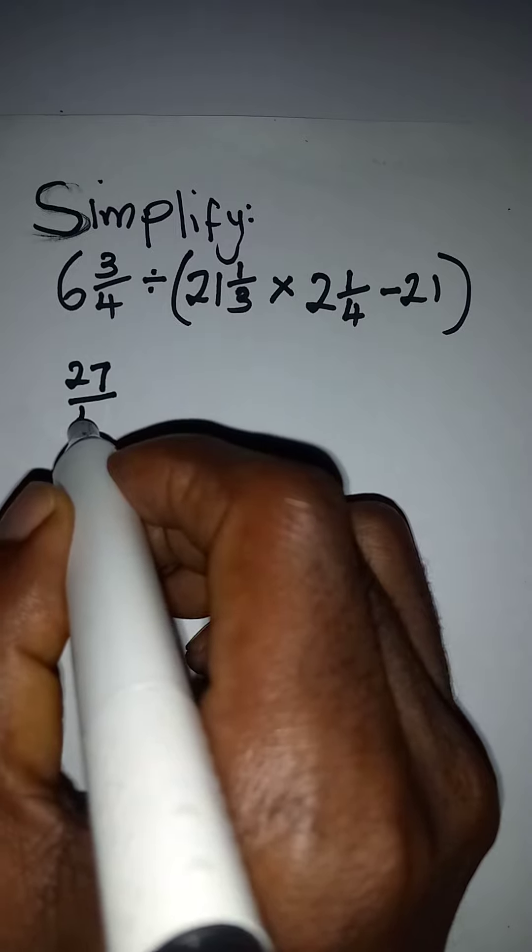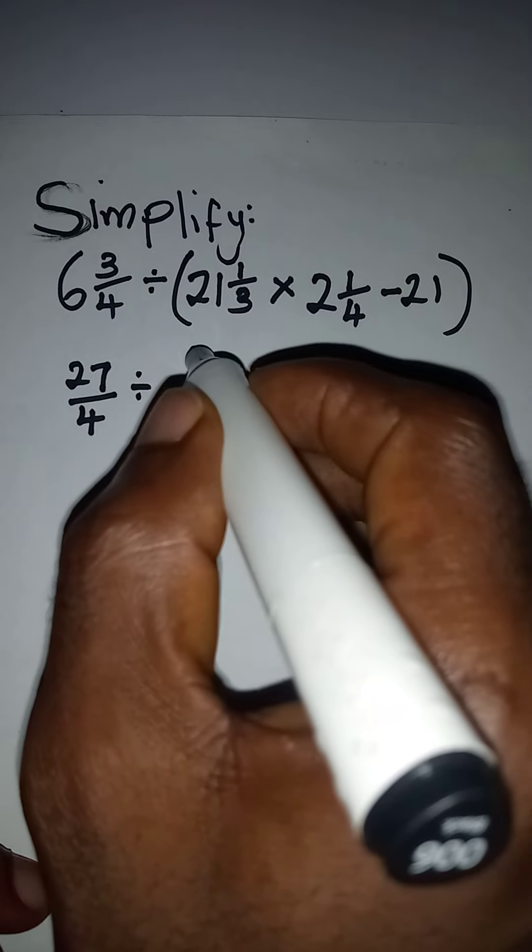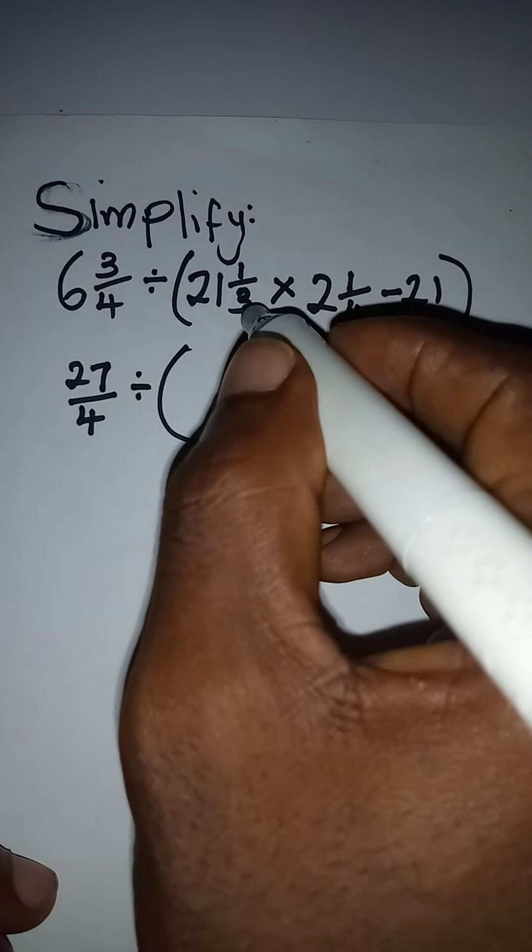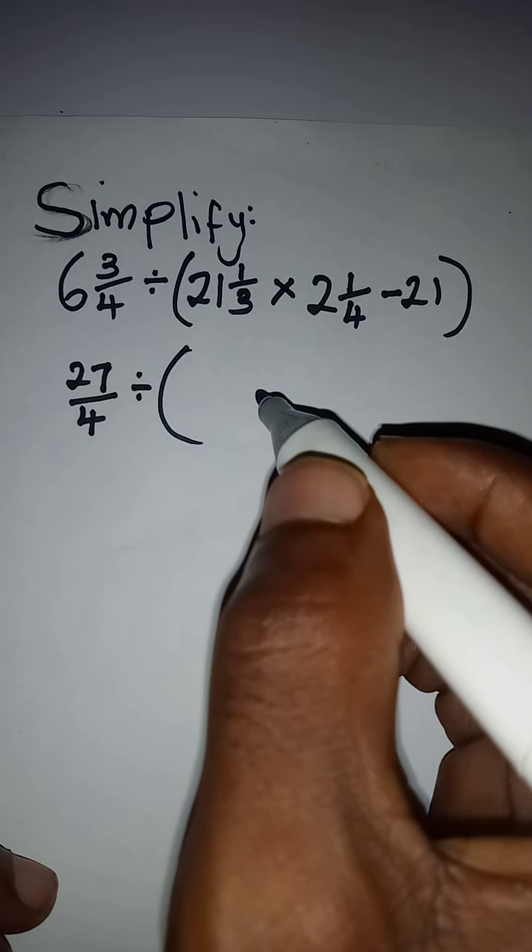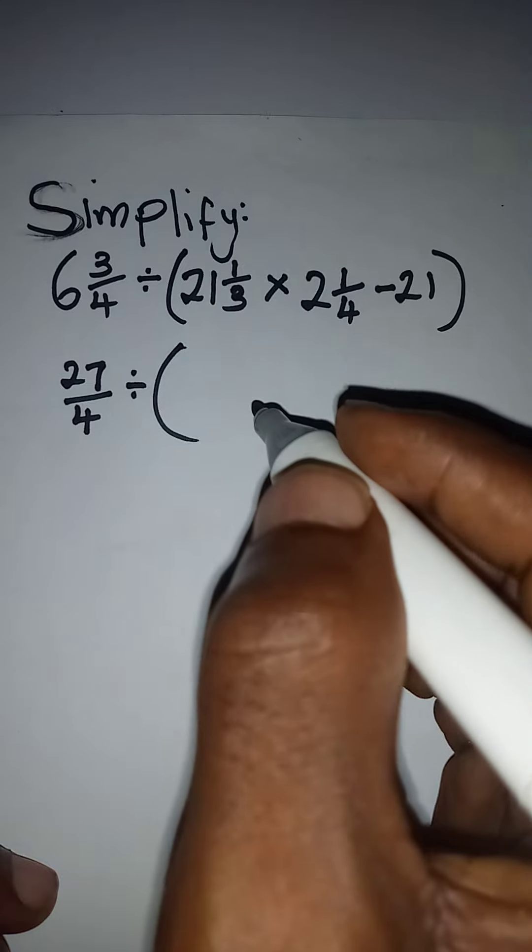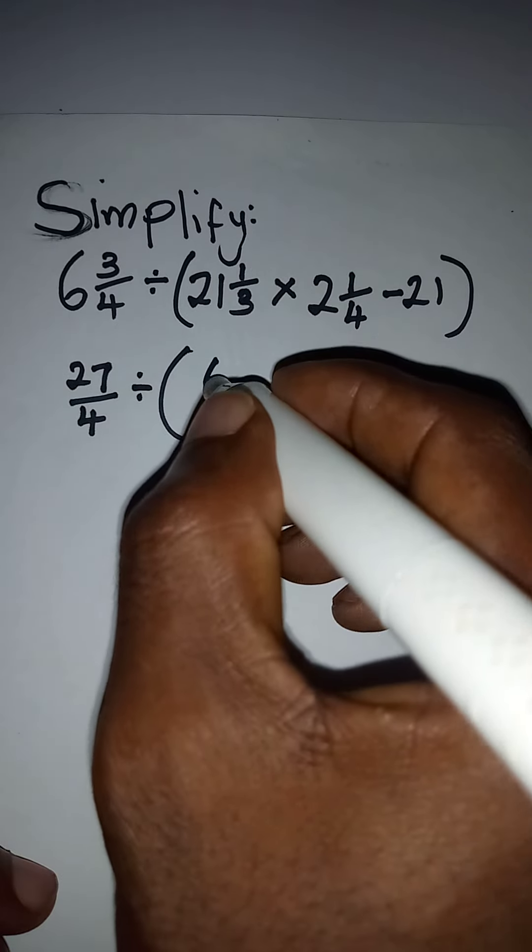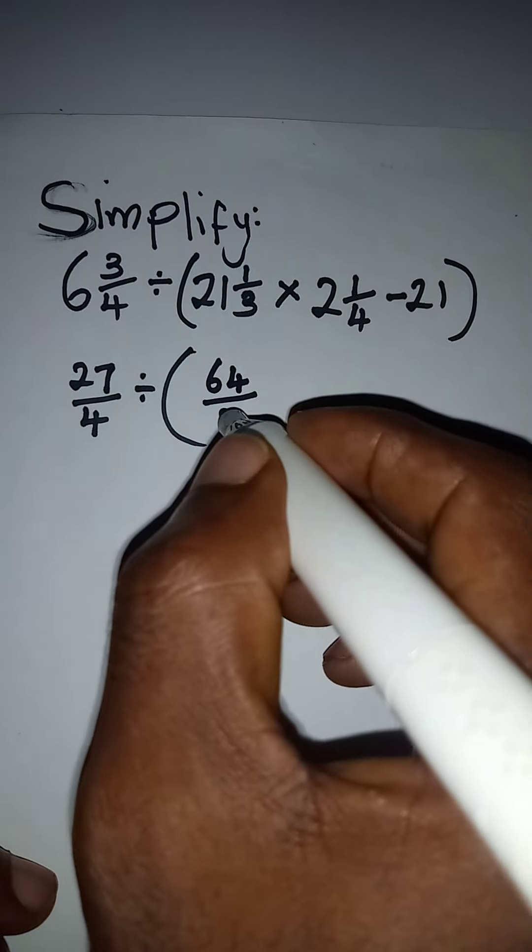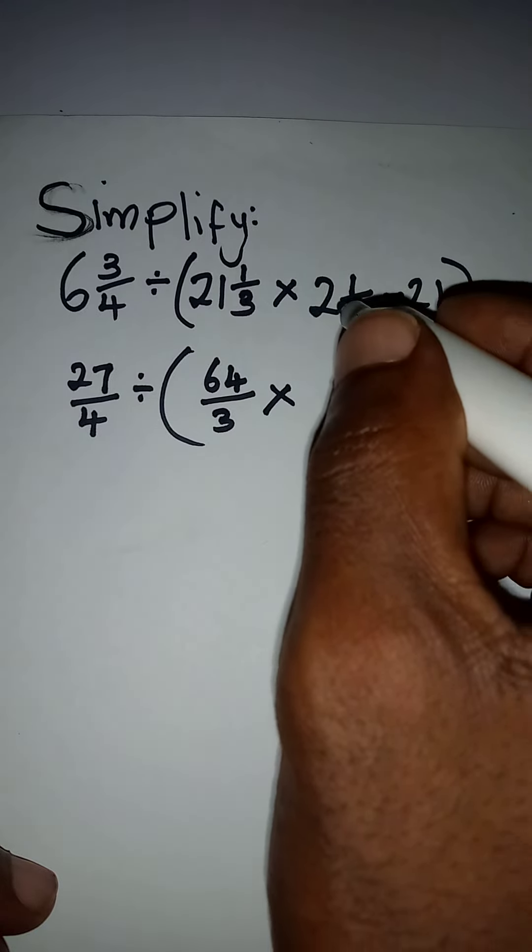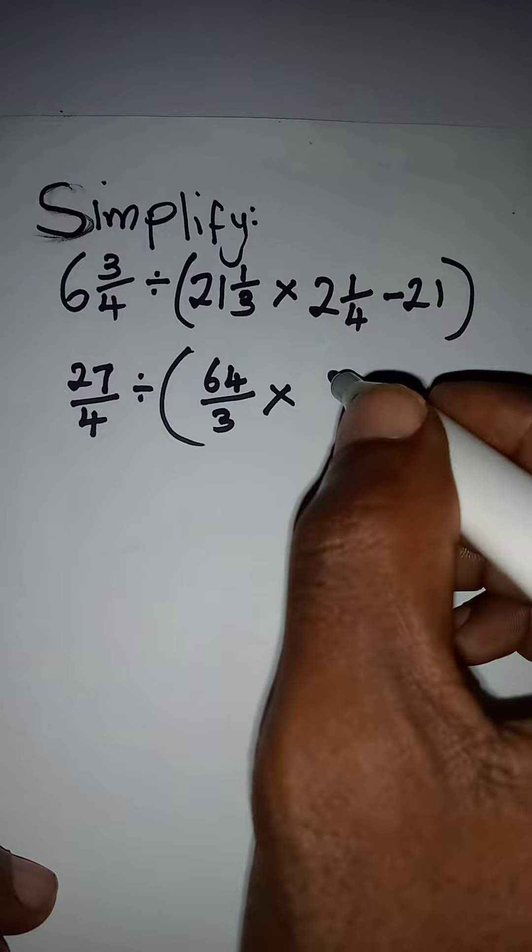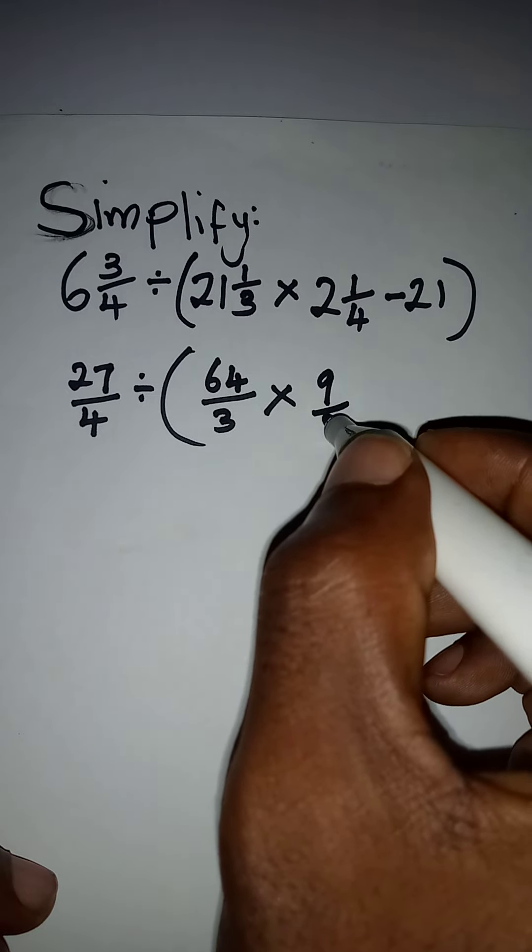have 27 over 4, then divide by, here 3 multiplied by 21, this will give me 63 plus 1, I will have 64 over 3, then multiply by 4 times 2 is 8 plus 1 is 9, all over 4,